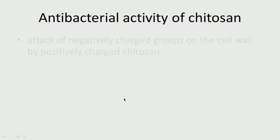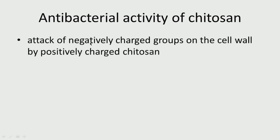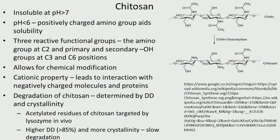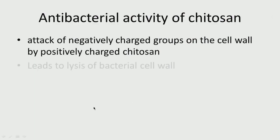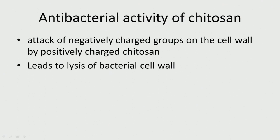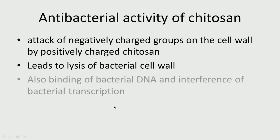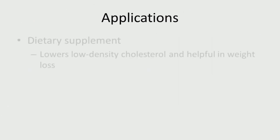Regarding antibacterial activity: chitosan attacks negatively charged groups on the bacterial cell wall using its positively charged amino groups, leading to cell wall breakage and lysis. Chitosan also binds to bacterial DNA and interferes with bacterial transcription. These are the main antibacterial mechanisms of chitosan.